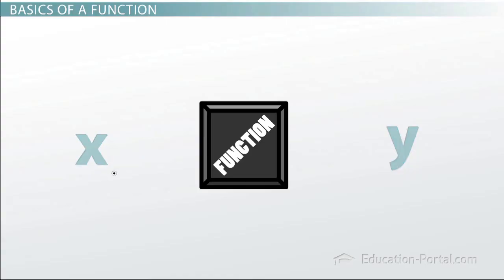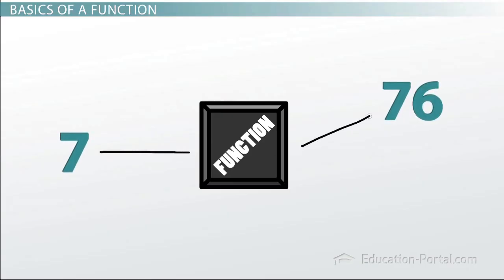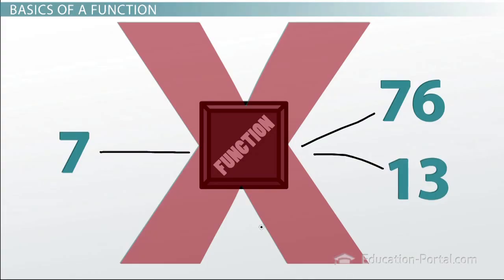Now sometimes you can put in two different numbers, let's say 4 and let's say 22, and get out the same number, say 39. But at no point in time will you put in one number and get two different numbers out. This may sound complex, but it's really just saying stuff you already know.